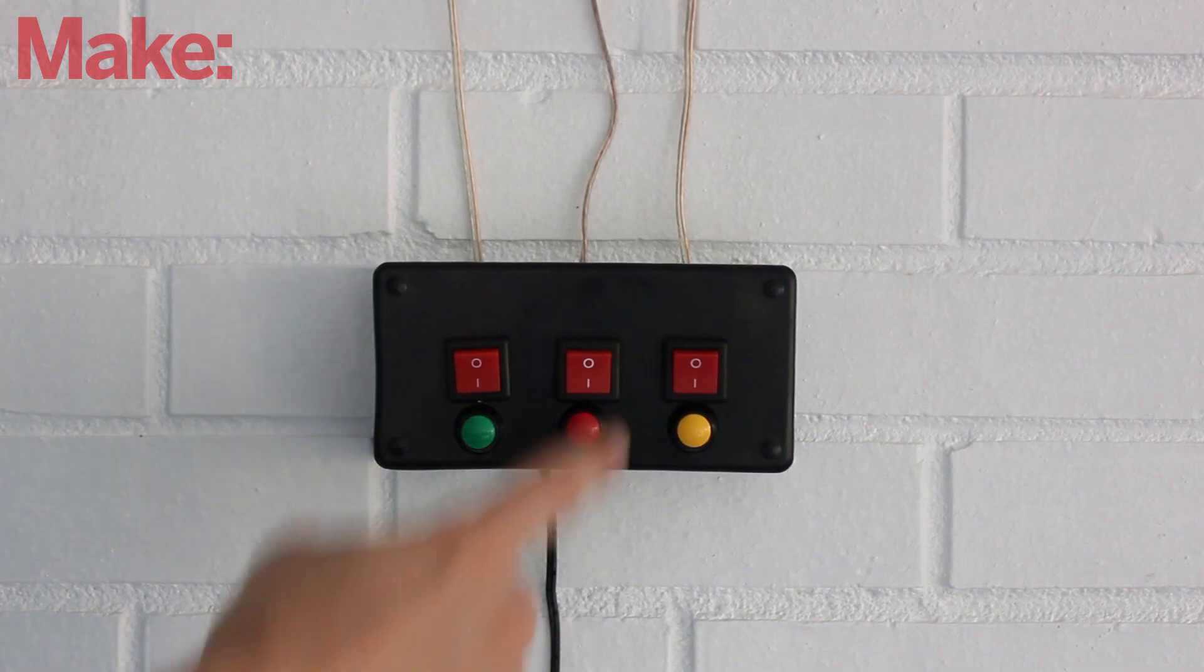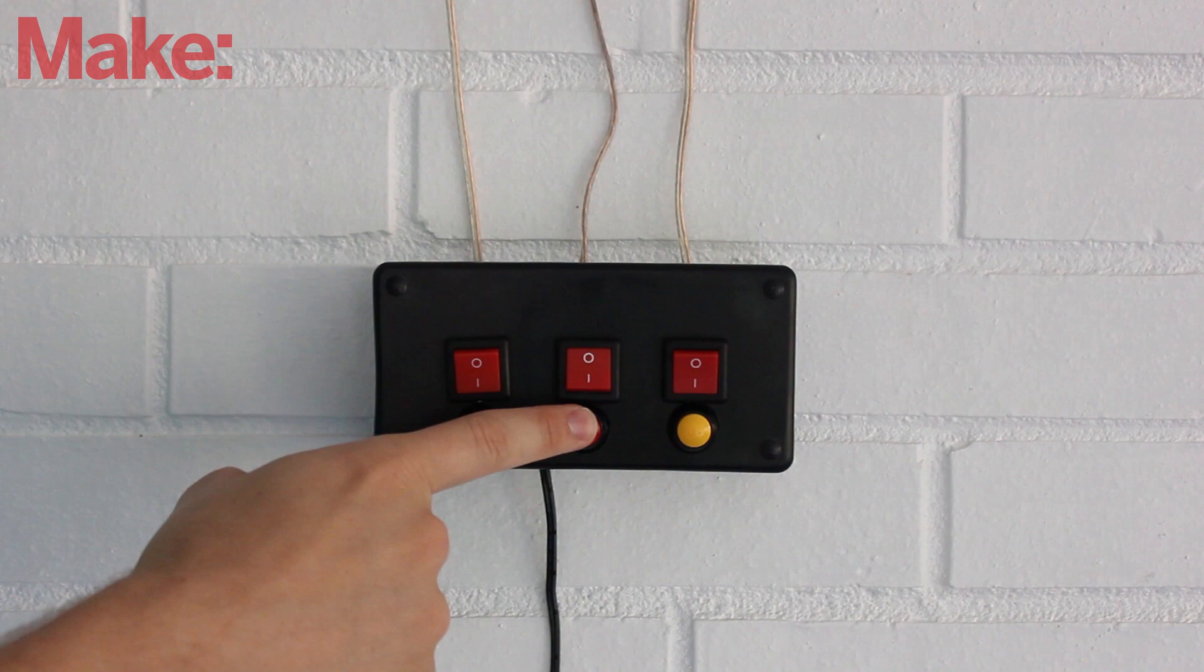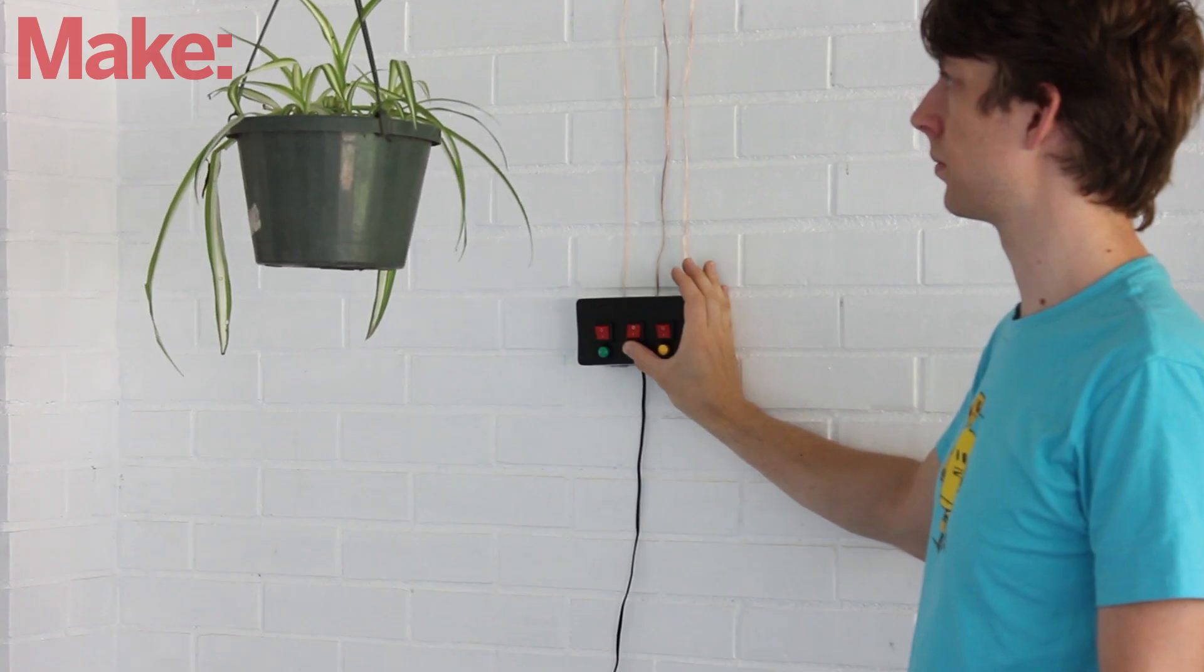To raise the plant back up, just press the up button and hold down the momentary switch until it is back up at the desired height.